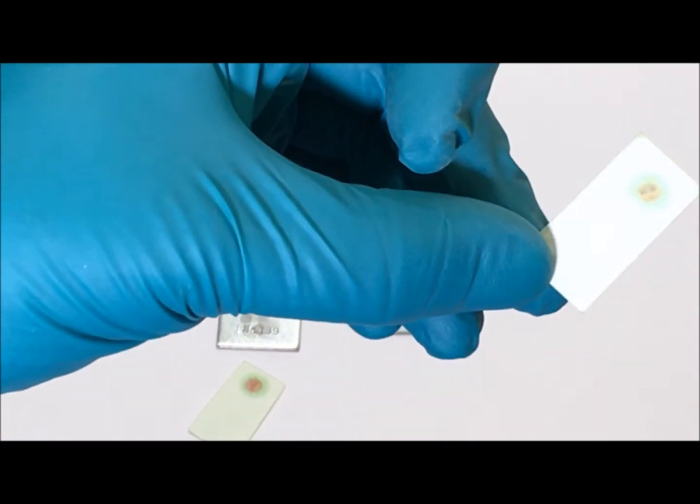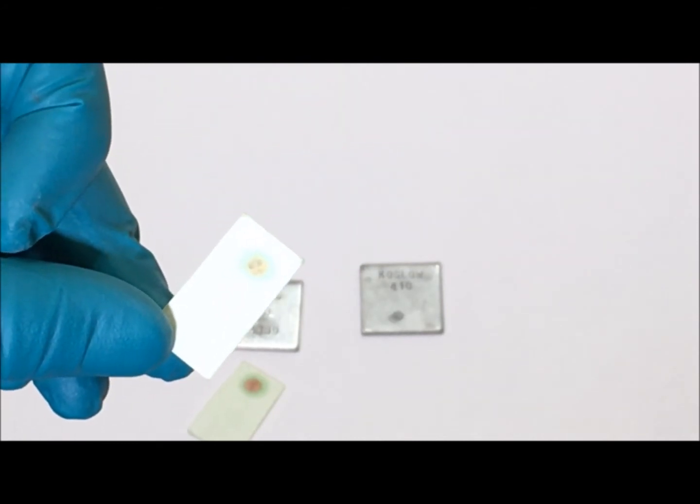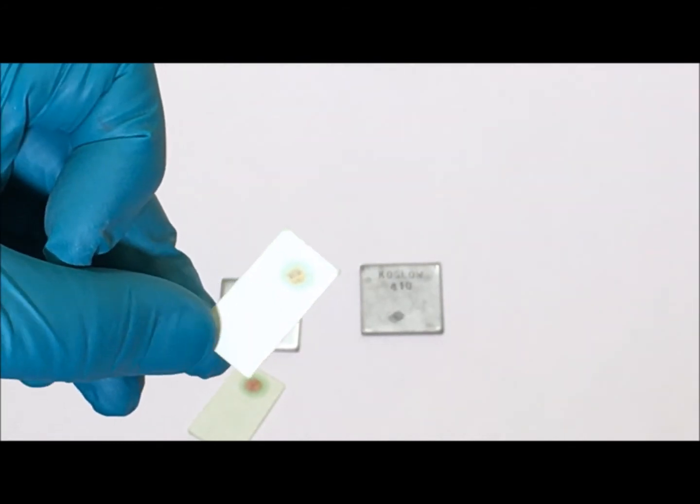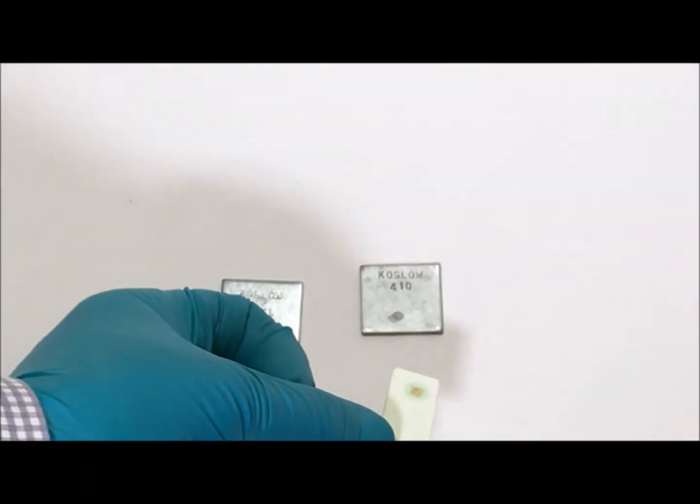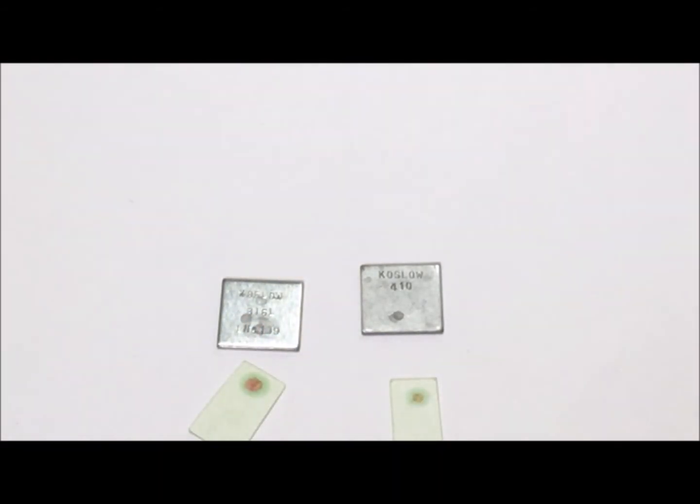So in this case the negative result is the 400 series, and the 300 series, because it contains nickel, gives you a positive test.